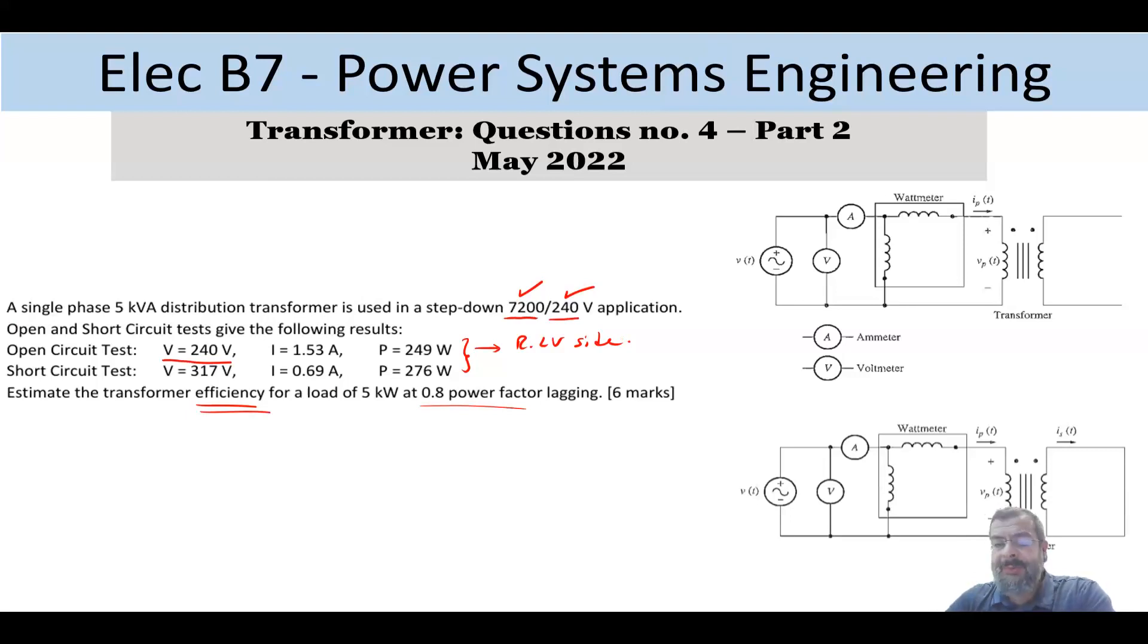Now in the short circuit test, which is this circuit here, the short circuit one side, and you apply the rated current. So you increase the voltage a little bit until you apply the rated current. In short circuit, we don't apply the rated voltage and rated current at the same time. So the voltage would be between 2 to 6% of the rated voltage. And usually, we do that from the high voltage side. So it's opposite.